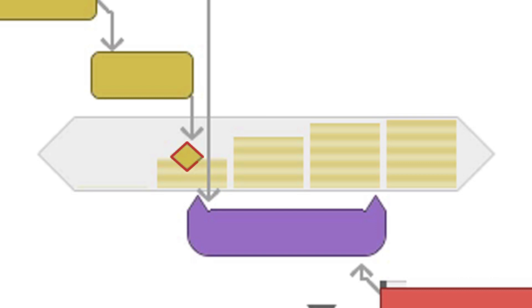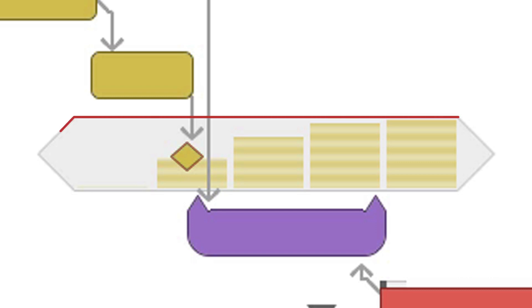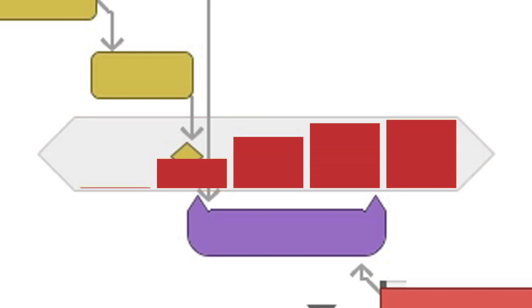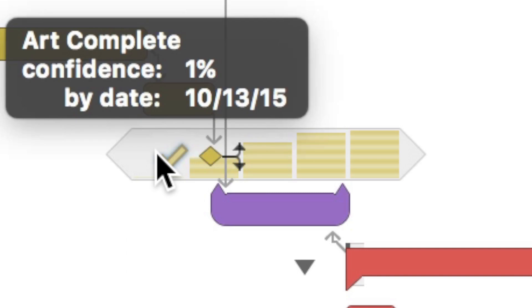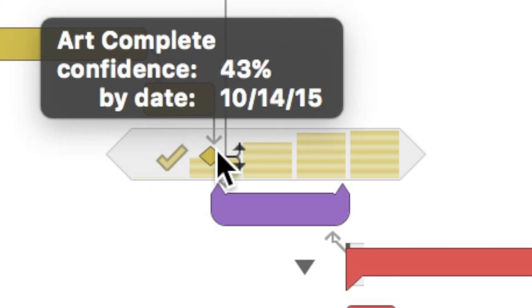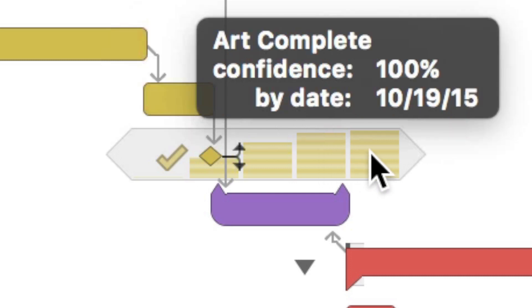The mini-diamond shows your currently planned milestone date. The expanded outline shows the complete range of times when your milestone could complete, from the earliest to the latest, based on the total minimum and maximum effort of all of the tasks it depends on. Inside the outline, there's a bar graph that shows the confidence level for each date — that is, how likely it is that the milestone will complete on that date. Hover over each part of the graph to see detailed stats.